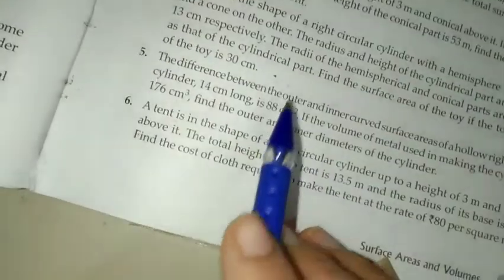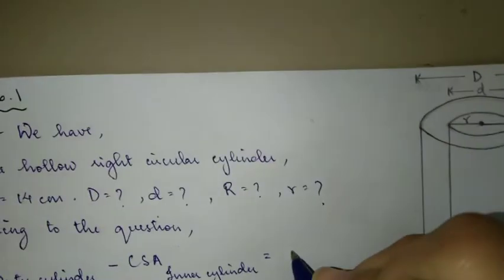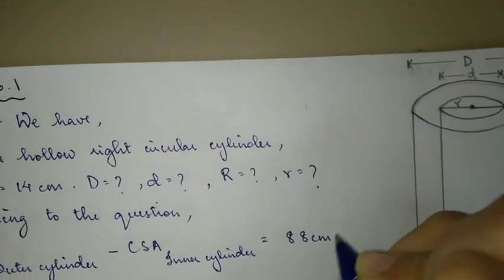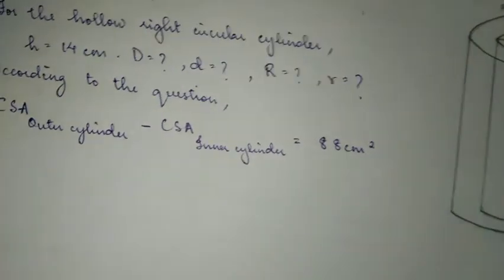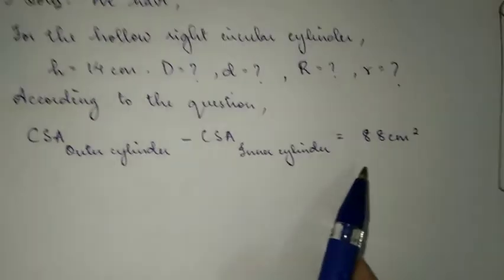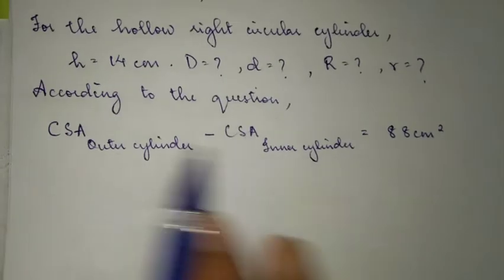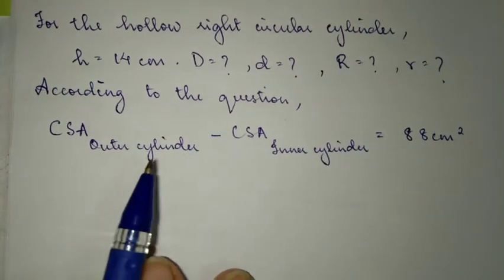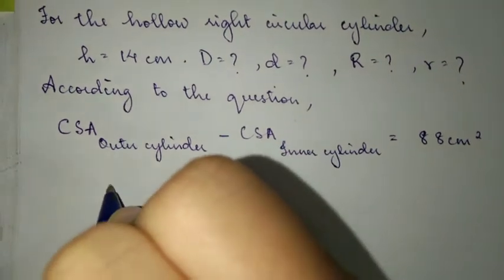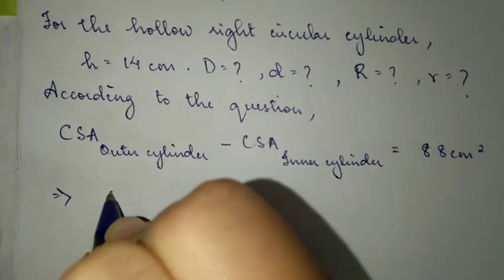I hope you understand this part. The reason why we're using a different formula for this is because in the question, they have not given you the total surface area. They've given you separate, separate for outer and inner. That is the only reason why we're doing it like this.